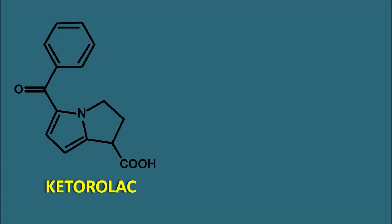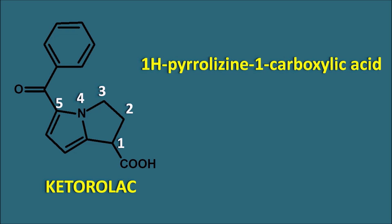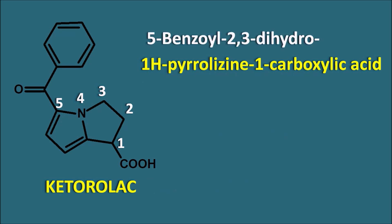The next drug is ketorolac. Ketorolac is not an acetic acid or propanoic acid derivative — it is simply a carboxylic acid attached to a pyrrolizine ring system. Numbering the ring from position 1 through 5, it is a 1H-pyrrolizine-1-carboxylic acid. At the fifth position there is a benzoyl side chain — 5-benzoyl. The second and third positions, which would normally be unsaturated, are here saturated, indicated by 2,3-dihydro. So 5-benzoyl-2,3-dihydro-1H-pyrrolizine-1-carboxylic acid is ketorolac.